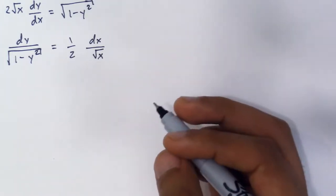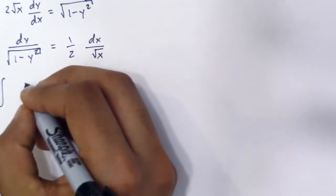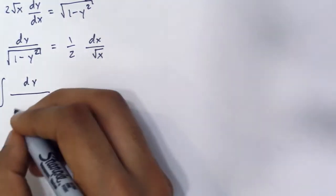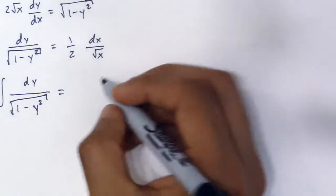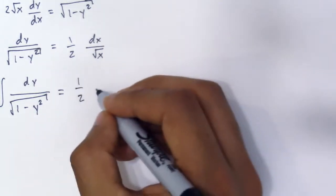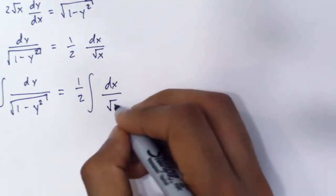Now it's a simple task of integrating, so what you can do is take the integral of dy over 1 minus y squared square root equals 1 half the integral dx over the square root of x.